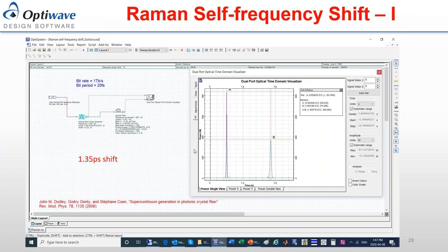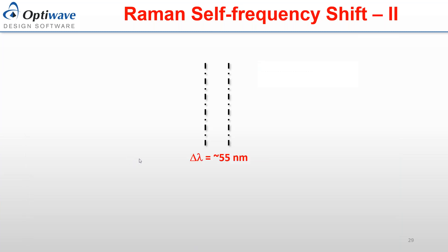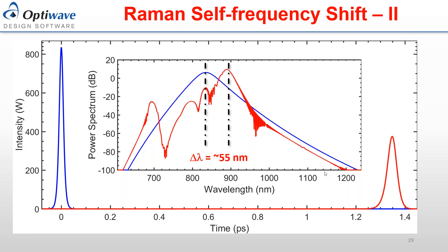We can see the pulses: the original pulses are here, and they start to temporally shift by around 1.35 picoseconds. In the frequency domain, the pulses start at the center frequency of 835 nanometers, and then start to shift by about 55 nanometers.